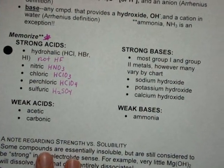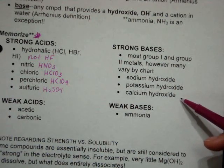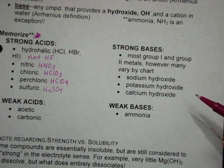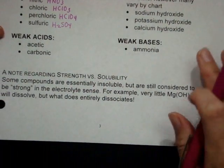In terms of the bases, sodium hydroxide, potassium hydroxide, calcium hydroxide. Most of the time, most books will consider all Group I and Group II metals to be strong bases. But the issue comes into play when you take a look down here.